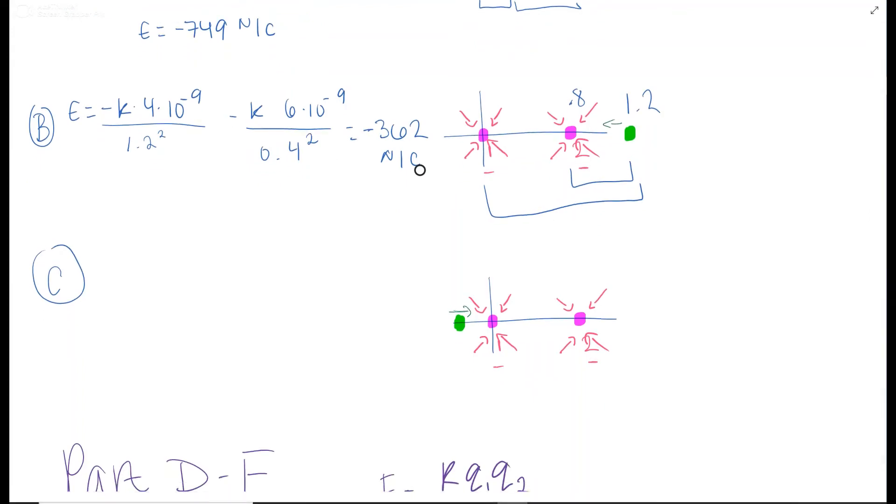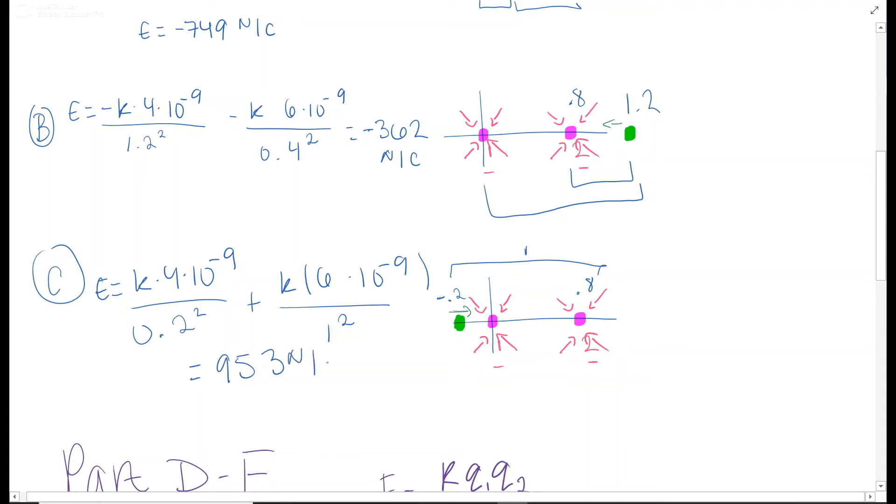And then the third one. Now we are at negative 0.2. This is still 0.8. So we have E equals. Now these are pulling them to the right. So we have positive. This is 0.2 squared. Certainly negative, but it squares, so it all goes positive. And this is 1 squared. Because we have 0.8 and 0.2. So from there, that is a distance of 1. And this one's going to be about 953 newtons over coulombs.